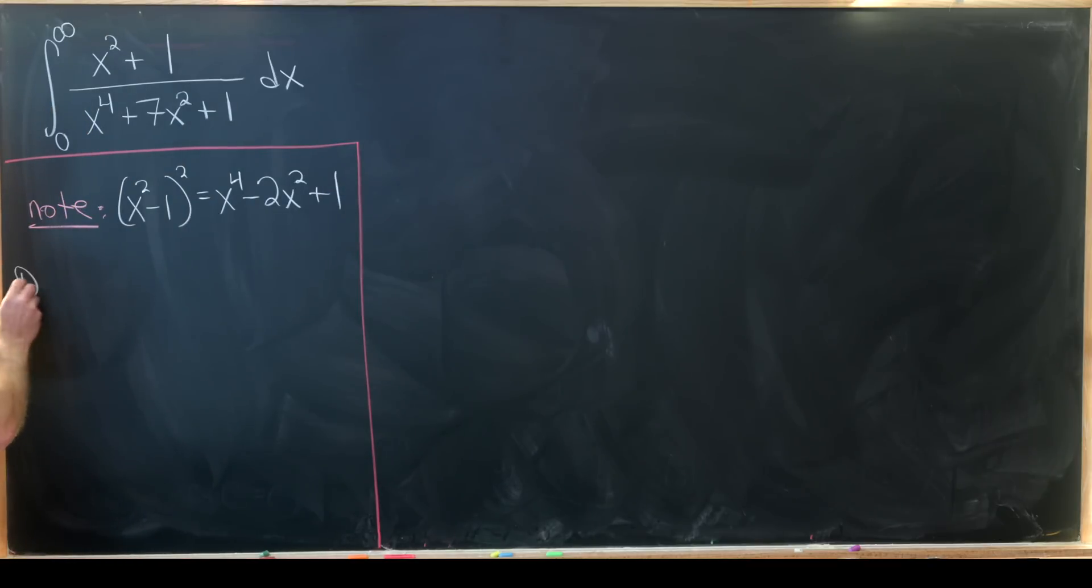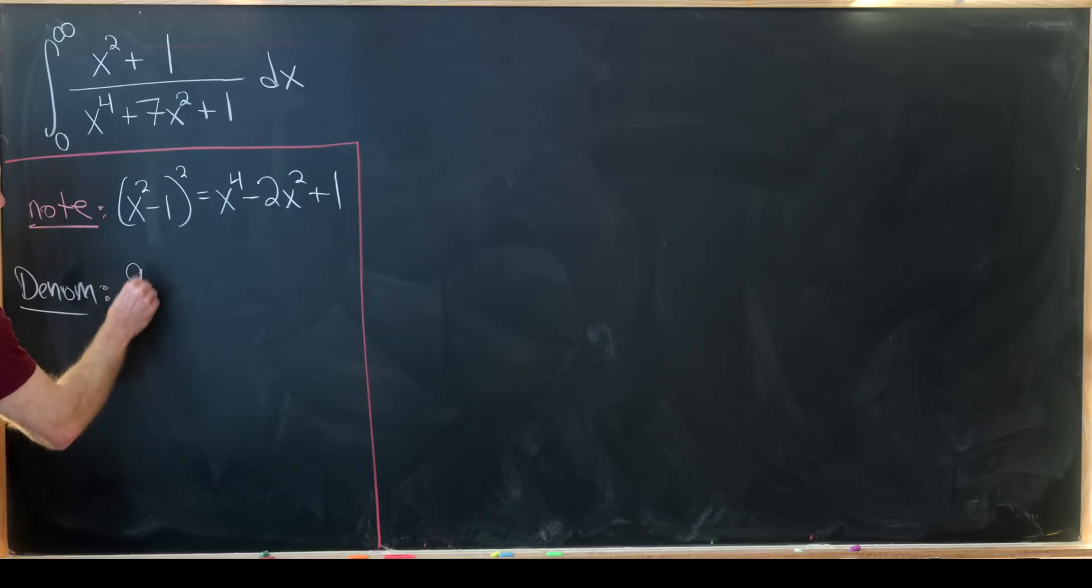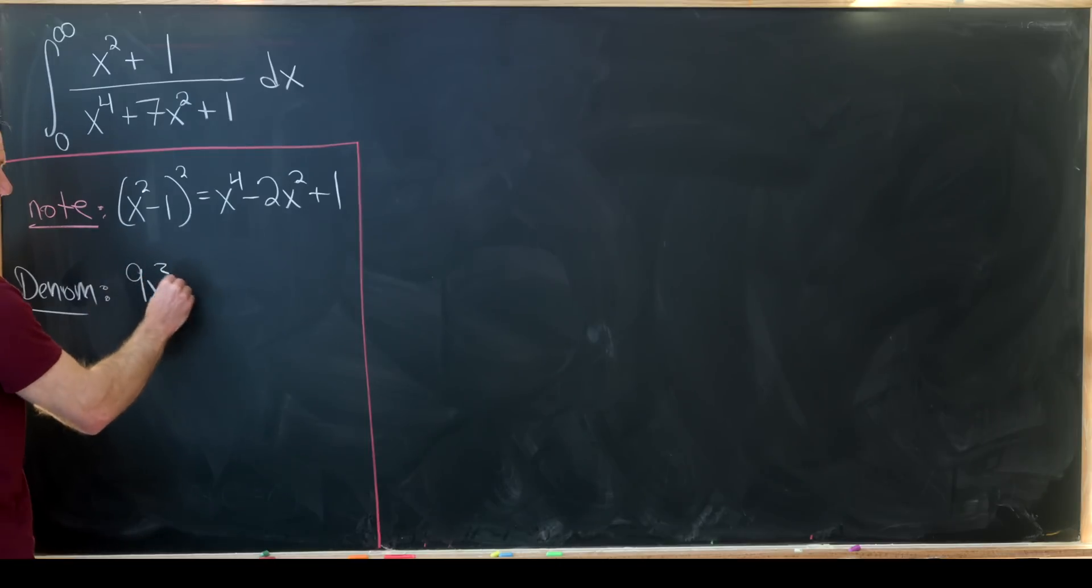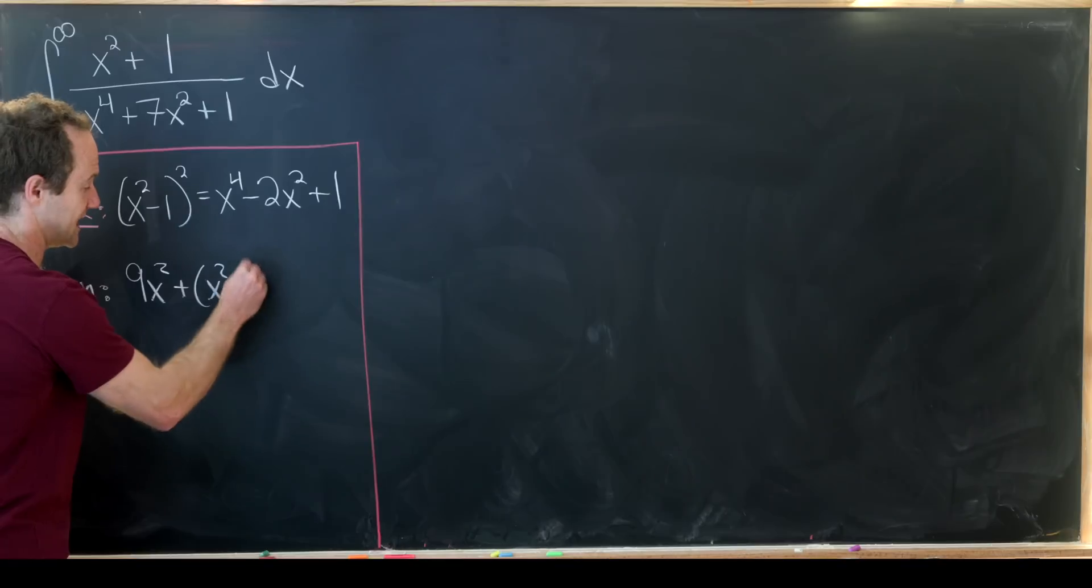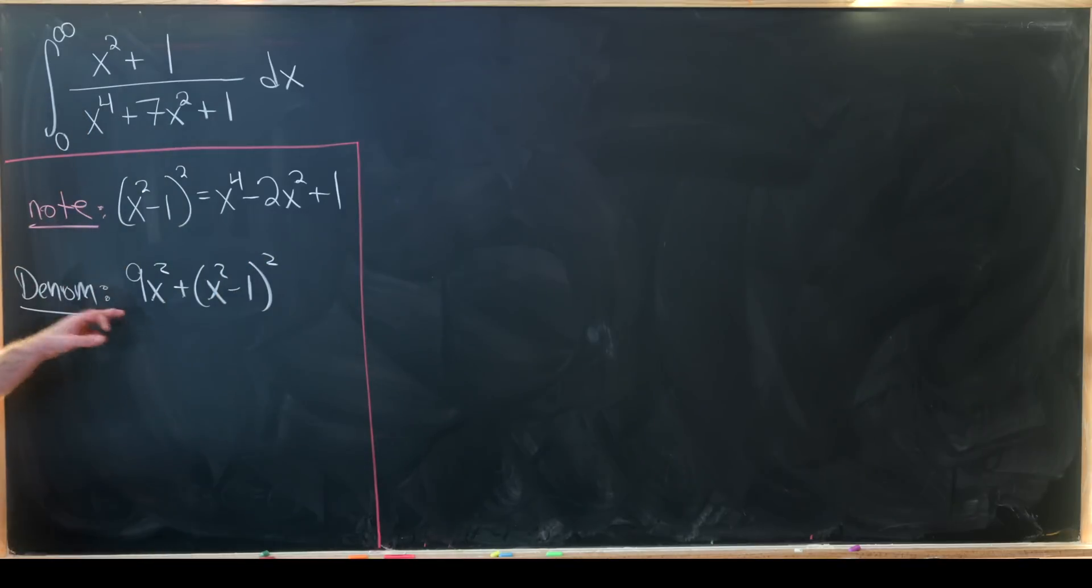So what does that tell us about the denominator? Our denominator is 9x squared plus x squared minus 1 squared. We see that because if we add 9x squared to this, that clearly changes this negative 2x squared to a 7x squared.